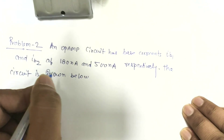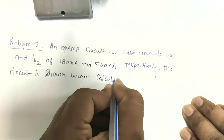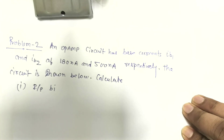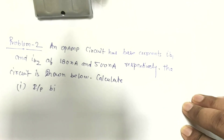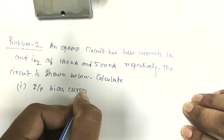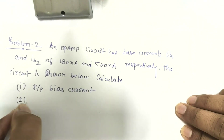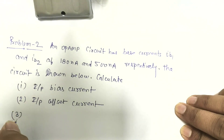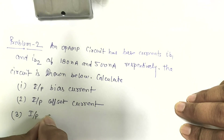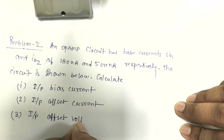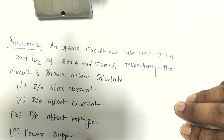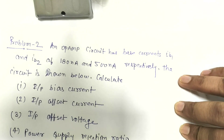The circuit is shown in the figure below. Calculate: number 1, input bias current; number 2, input offset current; number 3, input offset voltage; number 4, power supply rejection ratio. These are the four questions to solve.